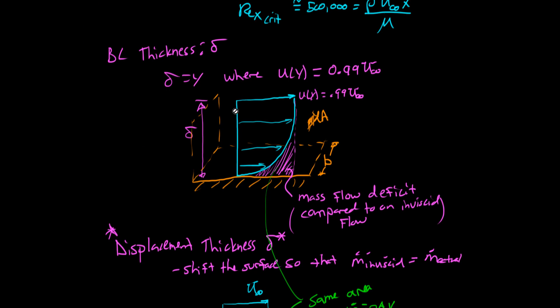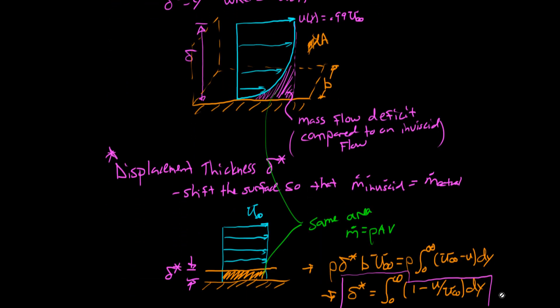There's an interesting thing happening here, though. Think about this in terms of mass flow. This region of slow flow is essentially a mass flow deficit. There's less flow happening through this region than there would have been if it were inviscid.